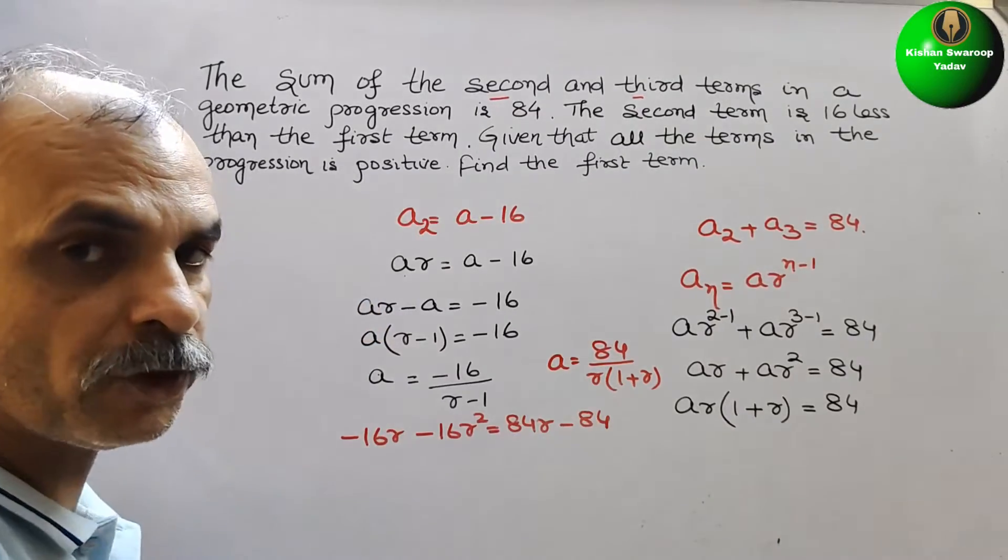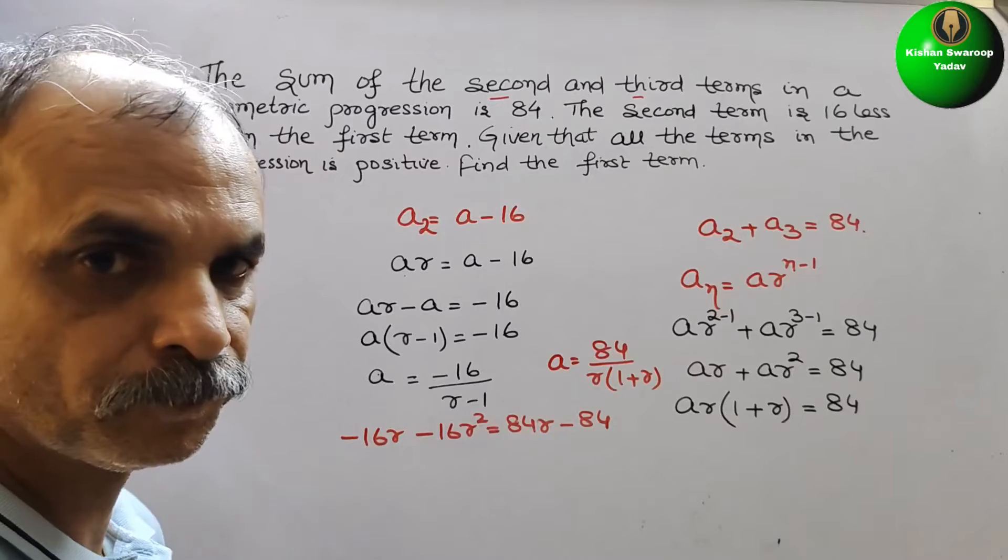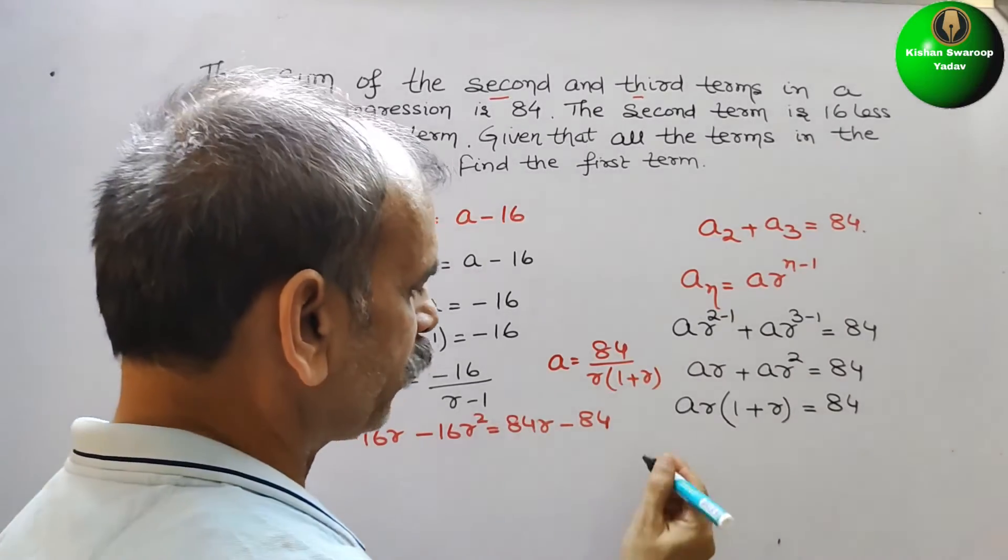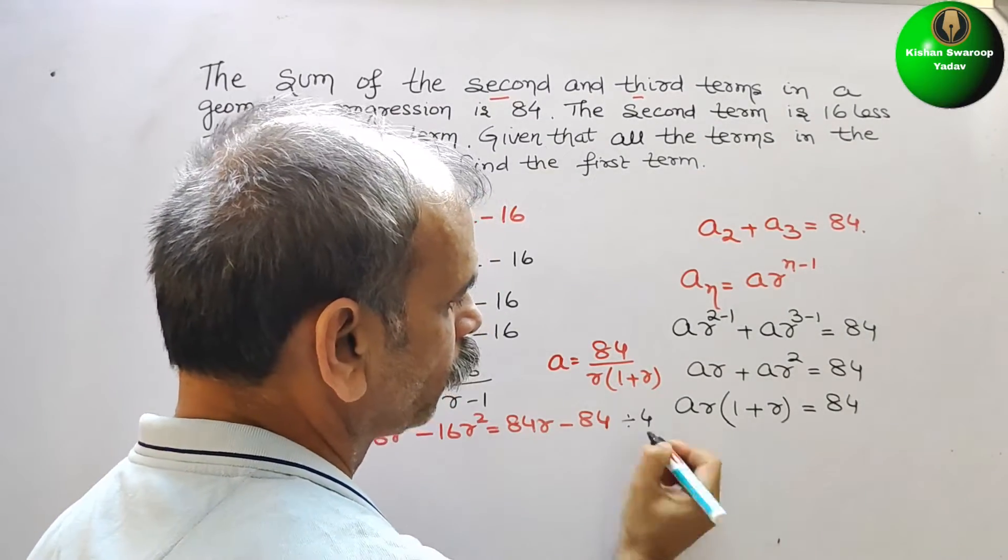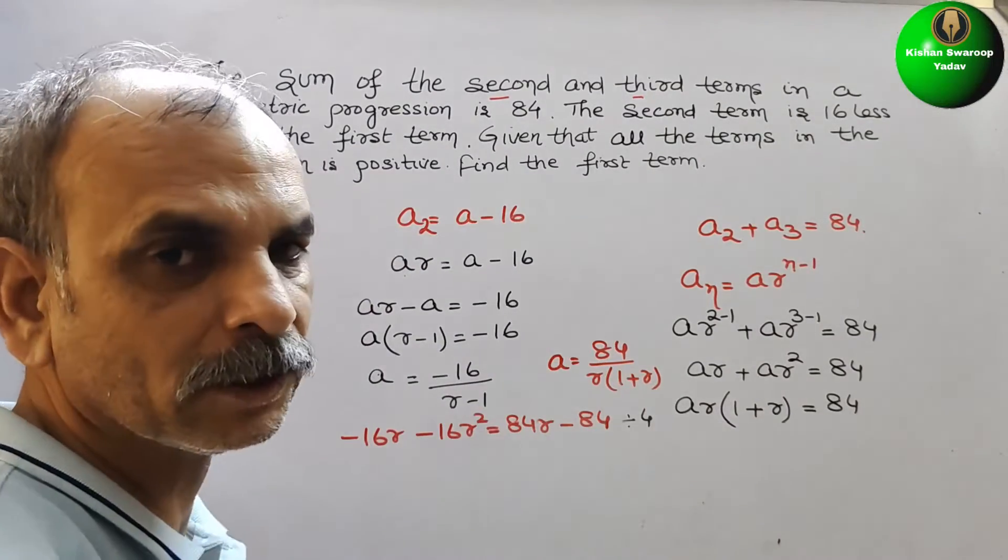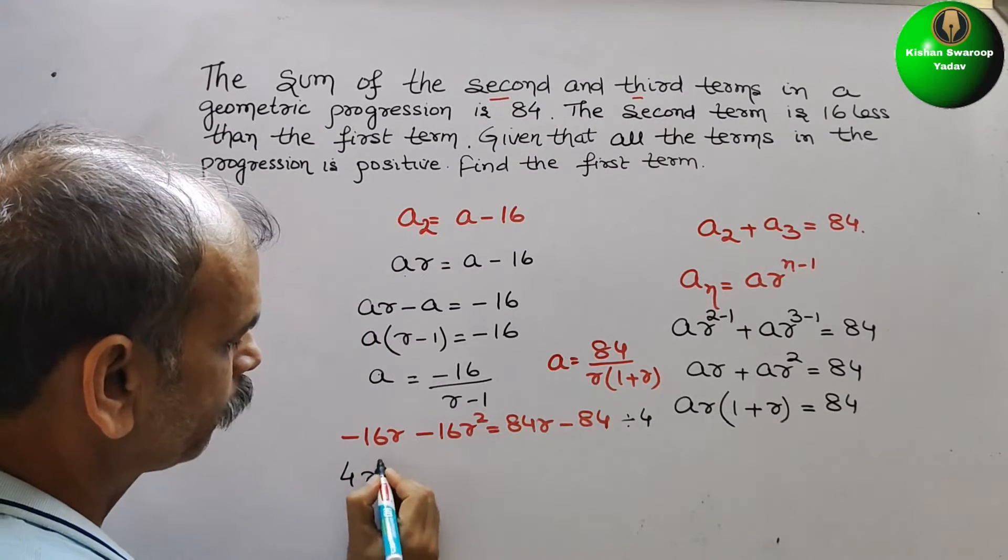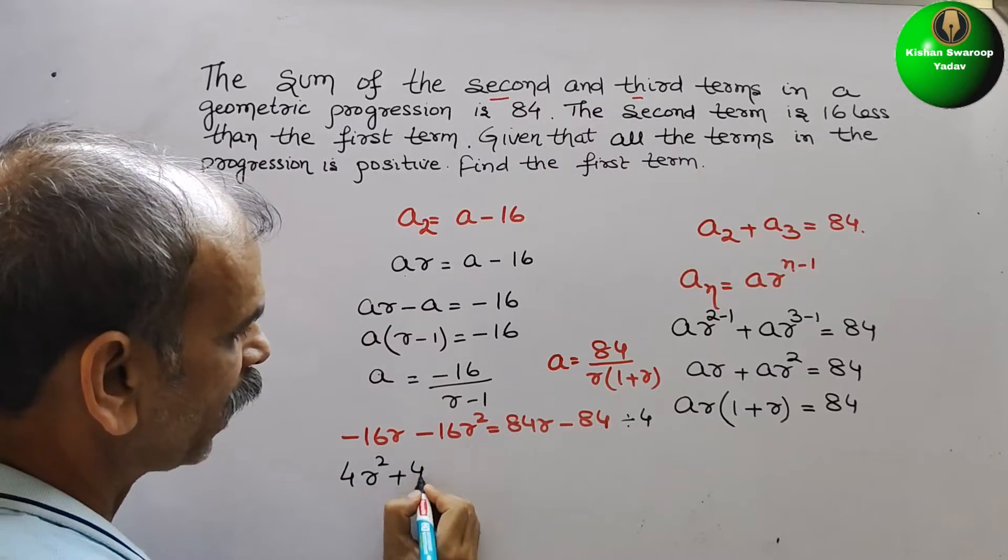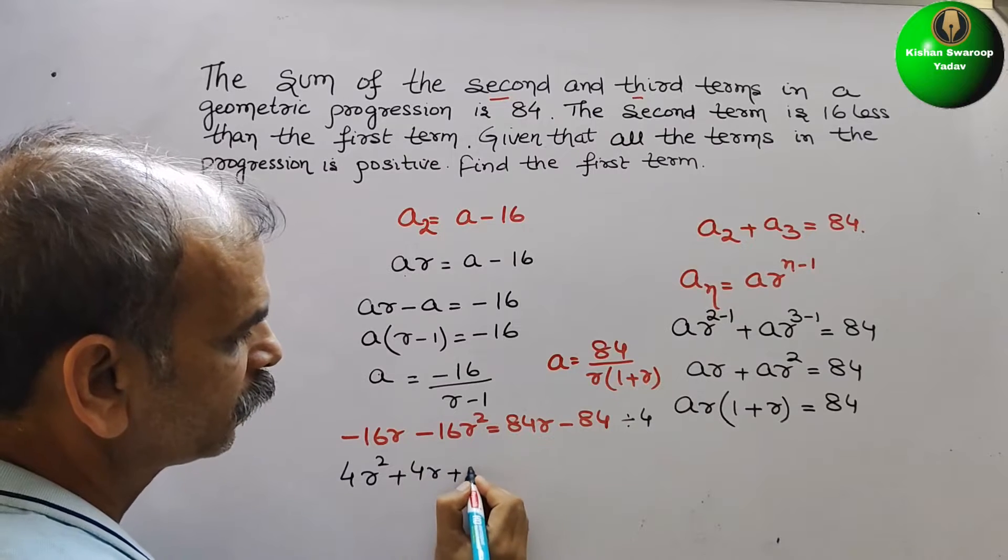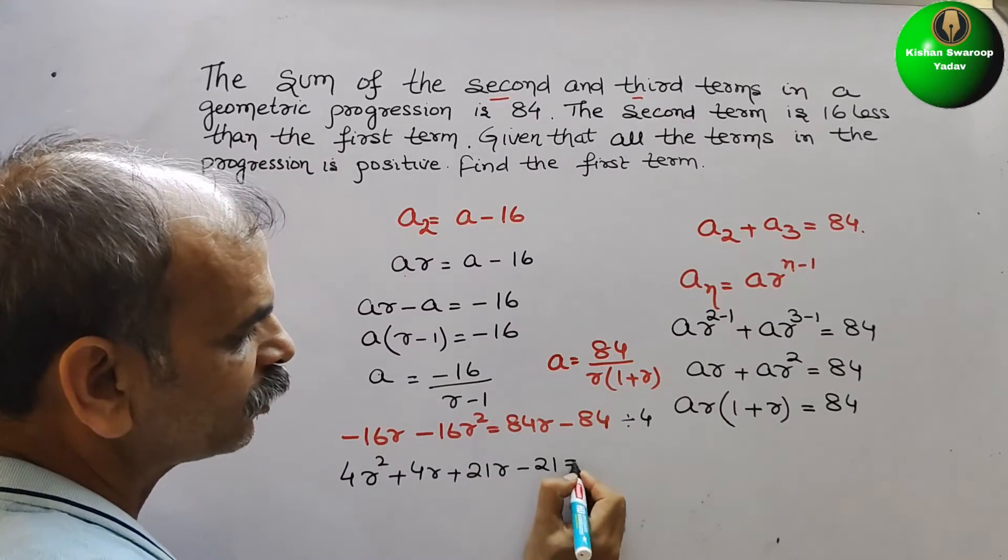So here we will get minus 16r minus 16r square is equal to 84r minus 84. Now if you see this, you can divide everything by 4. So we get minus 4r square plus 25r minus 21. That is equal to 0.